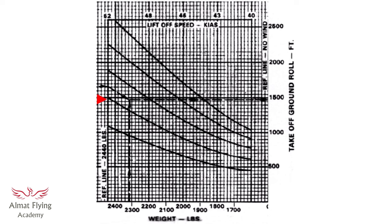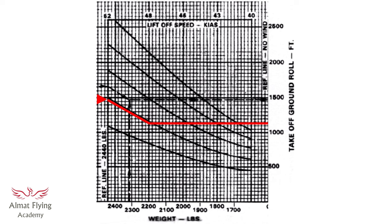We enter the graph on the y-axis, our take-off distance. We then parallel the curved reference line until we meet the vertical line of our take-off weight. Let's use an example of 2200 pounds. Here we enter the graph at 1450 feet, we parallel the nearest curve, and we stop at the 2200-pound vertical line. We now exit the graph horizontally to the right as before, which gives us an updated take-off ground roll of 1160 feet. This makes perfect sense. A reduced ground roll because we're lighter.